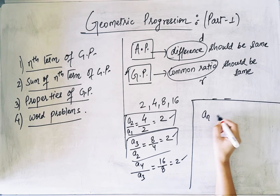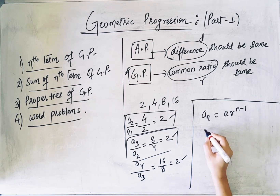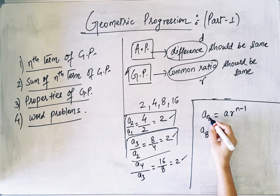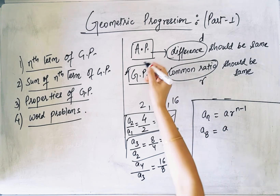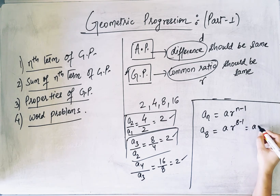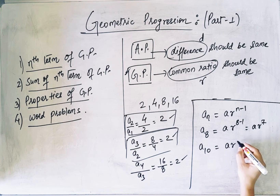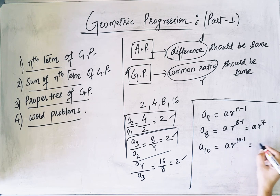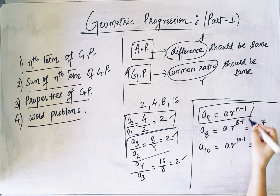The nth term is denoted by a × r^(n−1). For example, to find the 8th term, substitute n = 8: a × r^(8−1) = a × r^7. Similarly, for the 10th term: a × r^(10−1) = a × r^9. Here 'a' is the first term and 'r' is the common ratio.